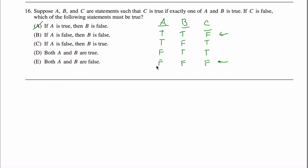If A is false, then B is false. Ooh, that looks pretty good. If A is false, then B must be false if I'm in this special case. Yup. If A is false, then B is true — no, here A is false and B is certainly not true. A and B are both true — no, that happens here but not down here. A and B are both false — no, it happens here but not up here. The answer would be B.